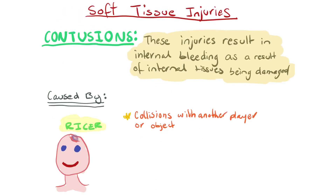The next type of injury is contusions. These result in internal bleeding as a result of internal tissues being damaged — you might refer to these as bruising. Common contusions include a knock to the head or a bump to the shin, in areas where the skin is relatively thin and there's not much tissue between the bone and skin. They're caused by collisions with another player or object, and the treatment for contusions is RISA.